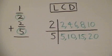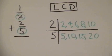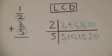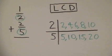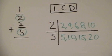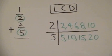Once we do this, we look for common multiples. In this case, ten would be a common multiple. Since it's also the least common multiple, ten will be our LCD.